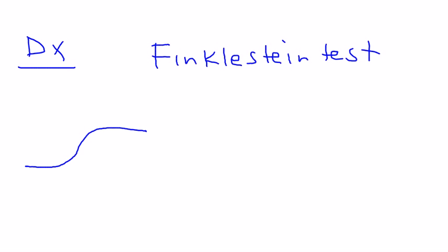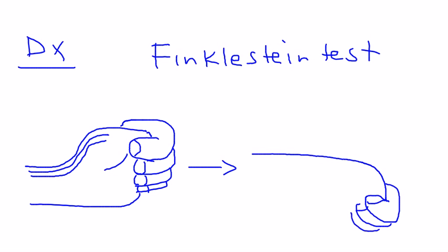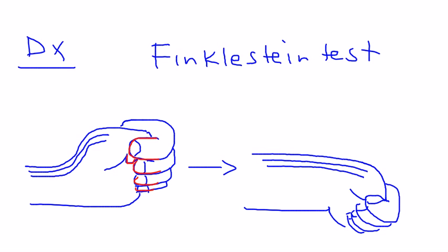Fortunately there is a very good physical exam test known as the Finkelstein test. You have the patient adduct the thumb into the palm, hiding it inside the hand, and then wrap the fingers around the thumb. Once the fingers are wrapped around the thumb, you passively deviate the wrist into ulnar deviation. When you do that, it provokes pain in the affected tendons.